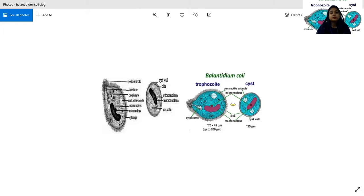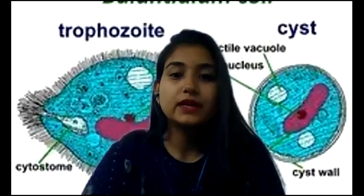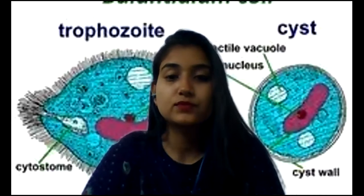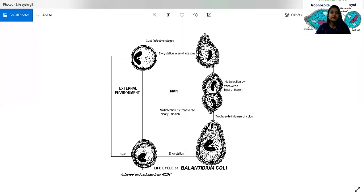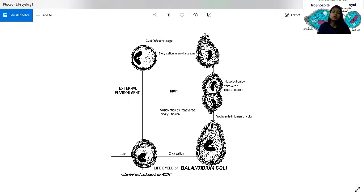Life cycle: Development occurs in the large intestine. Mode of transmission is fecal-oral route. The hyaluronidase enzyme helps penetrate the intestinal mucosa. Excystation occurs in the small intestine, where trophozoites are produced from cysts. From each cyst, similar trophozoites form. Multiplication occurs in the large intestine.